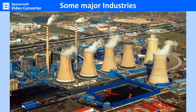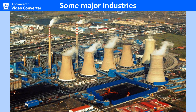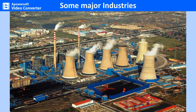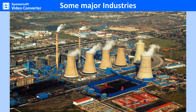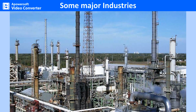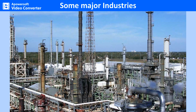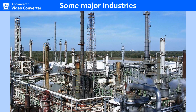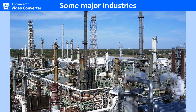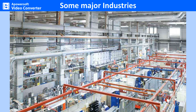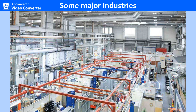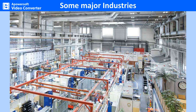Some major industries. Let us now look at some of the major industries involved in the production of a variety of goods required by man. These industries can be broadly divided into two categories: heavy industries, including iron and steel, metallurgical, heavy machinery, heavy chemicals, transport equipment, and fertilizer industries; and light industries, including textiles, sugar, food processing, electrical and electronic goods, and various consumer goods industries.